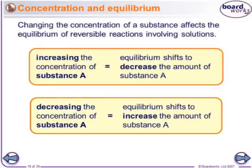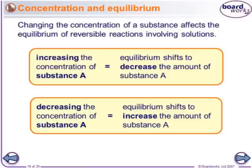Changing the concentration of a substance affects the equilibrium of reversible reactions which are in solutions — solutions just means stuff dissolved in something, like salty water or sugary water. Increasing the concentration of substance A means the equilibrium will react to decrease the amount of substance A. Decreasing the concentration of substance A upsets the equilibrium again, and so the equilibrium shifts in a way to produce more of substance A.